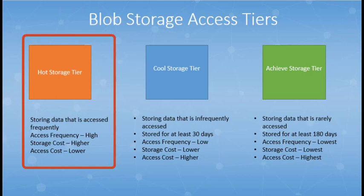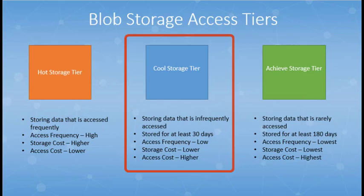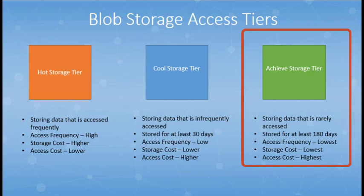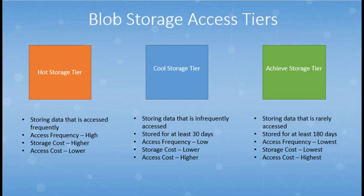The hot access tier is optimized for frequent access of objects in a storage account. Accessing data in the hot tier is the most cost-efficient, while storage costs are higher. The cool access tier is optimized for storing large amounts of data that is infrequently accessed and stored for at least 30 days — storing data here is cost-efficient but accessing it is more expensive. The archive access tier is available only for individual Block Blobs, optimized for data that can tolerate several hours of retrieval latency and will remain in the archive tier for at least 180 days. Note that changing access tiers, for example from hot to cool, will incur charges.